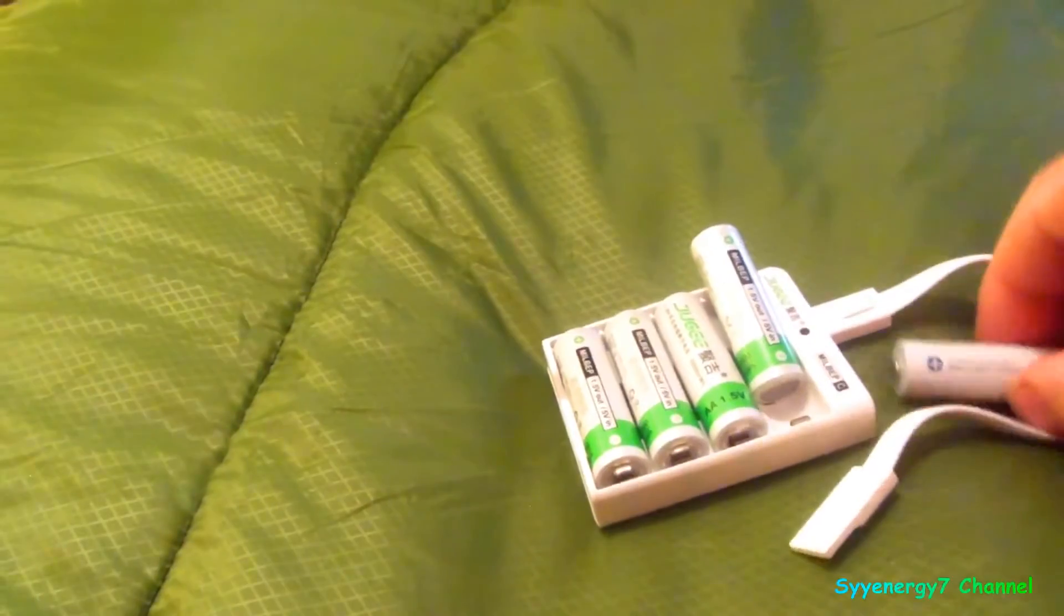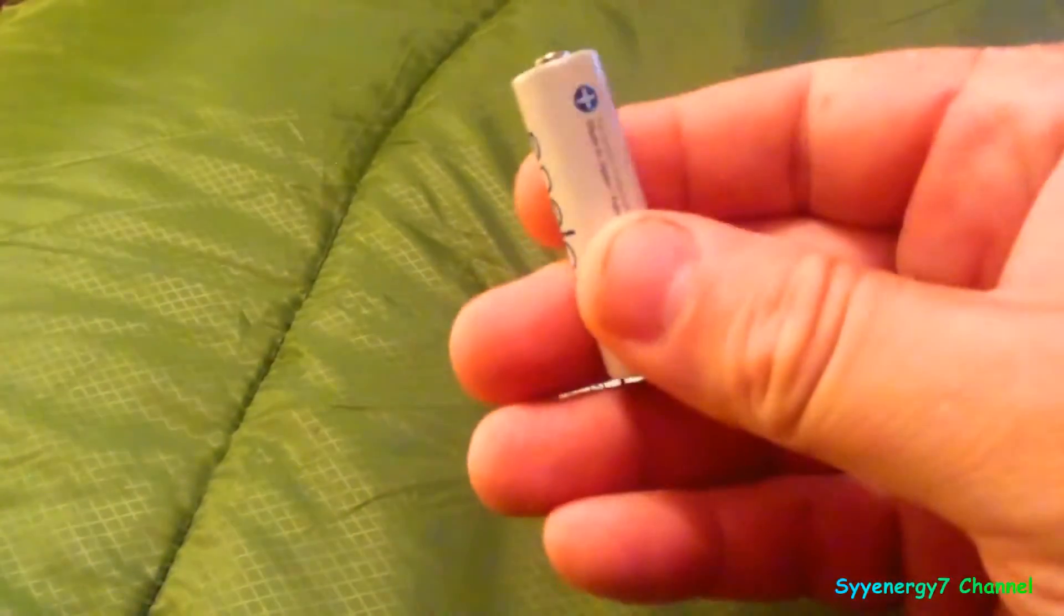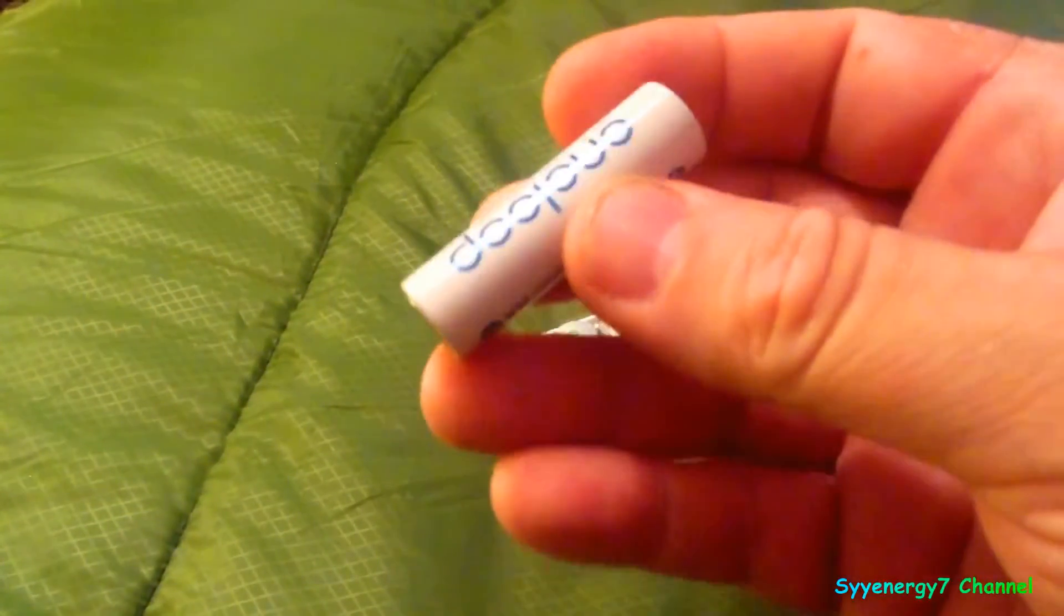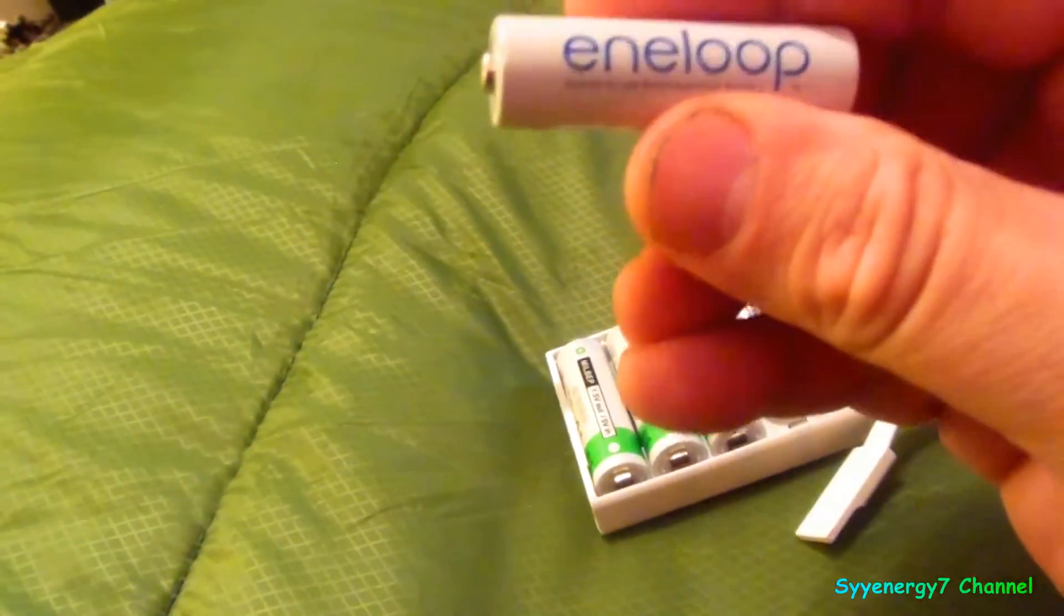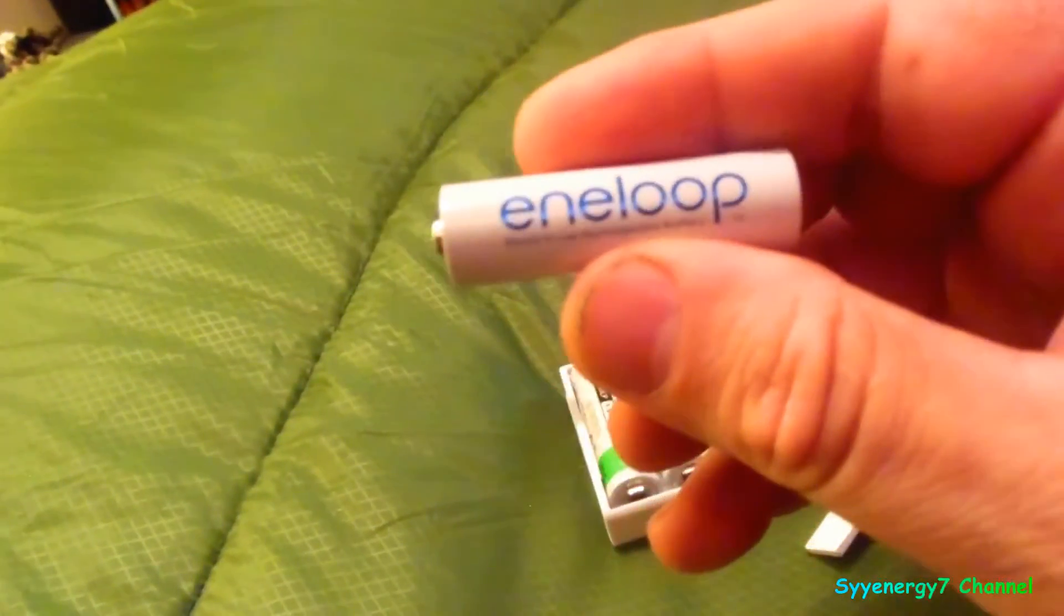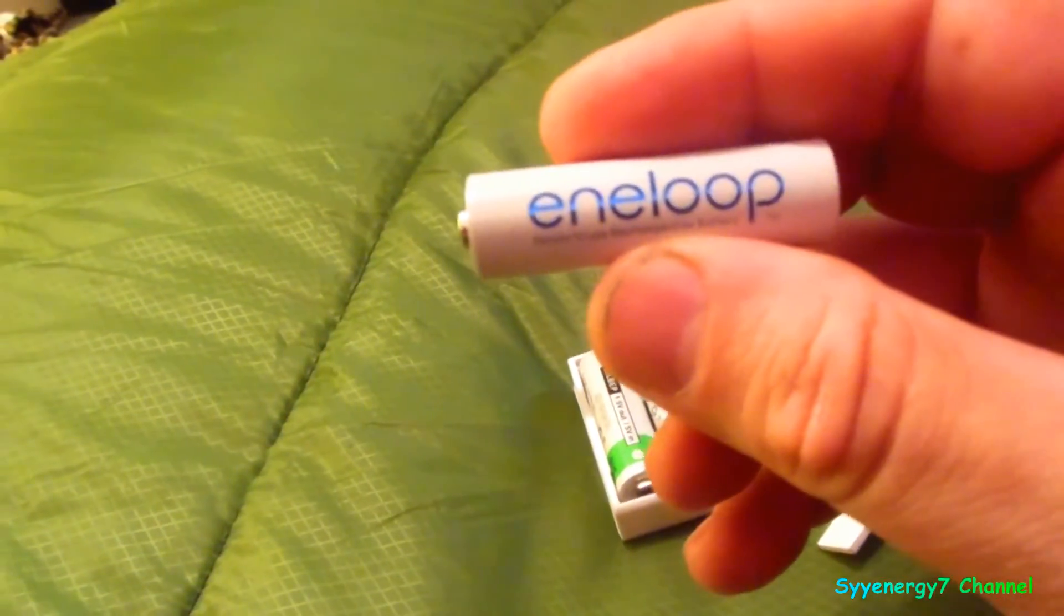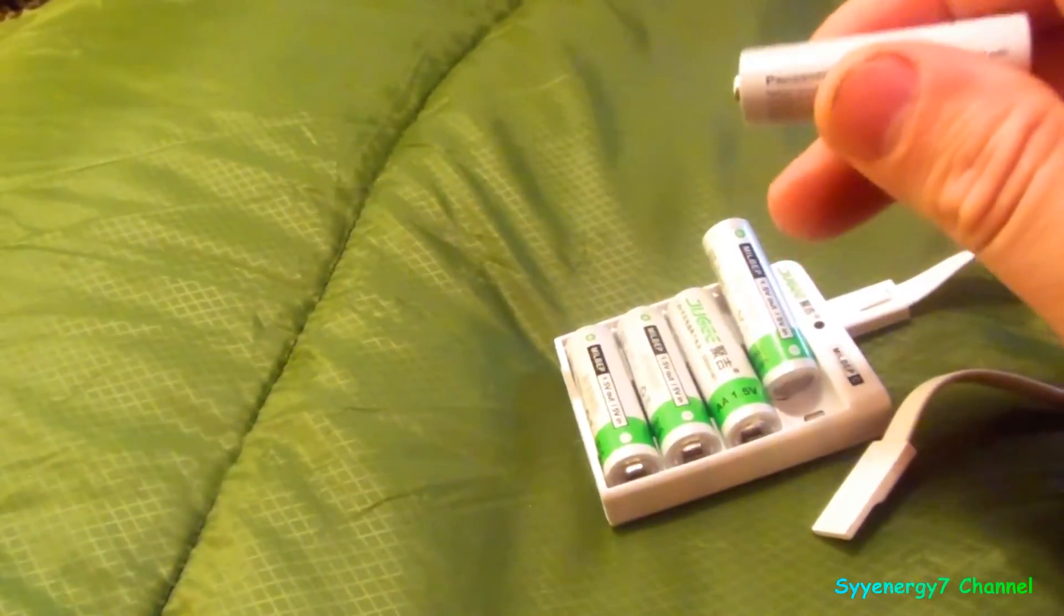Now unlike other rechargeable batteries, these are 1.2 volts. This is a 1.2 volt, this is a good battery - Eneloop, I think it's by Panasonic - but they're 1.2 volts by default. But since these are lithium, these are 1.5 volts.